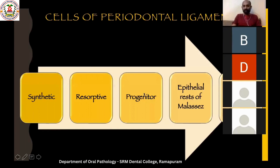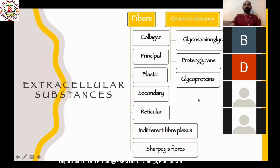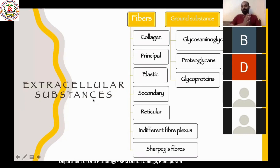The cells of the periodontal ligament are categorized into synthetic cells, resorptive cells, progenitor cells, the epithelial rests of Malassez, and a few other cells — but I will not cover this today. My topic is the other components apart from the cells, which are referred to as extracellular substances, meaning those substances outside the cell.